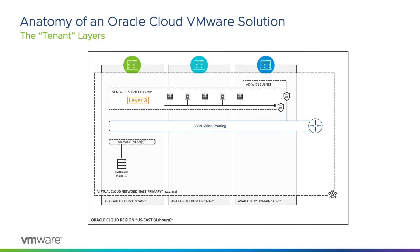Oracle Cloud provides us with a special construct which supports things like ESXi and vSAN that need layer 2. The VLAN behaves in much the same way as a subnet, but with additional layer 2 support. Currently, VLANs can only span a single availability domain, so any connectivity between ADs has to be at layer 3. With this, we have the foundations of an Oracle Cloud VMware Solution, and to support all the software-defined data center components and connectivity, we will need 10 VLANs.